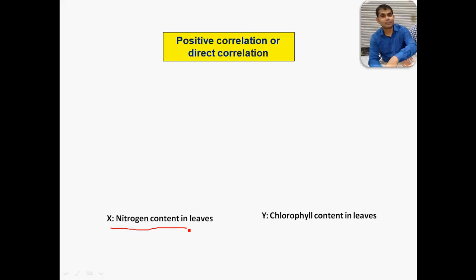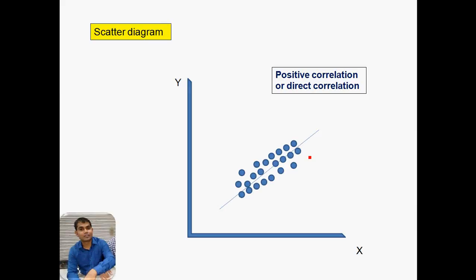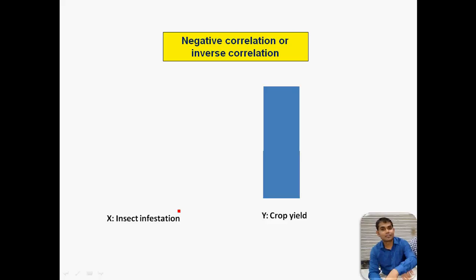Starting with positive or direct correlation: suppose we take the example of nitrogen content in leaf and chlorophyll content in leaf. If the nitrogen content is increasing in the leaf, simultaneously the chlorophyll content will also increase, because nitrogen is a very important component of the chlorophyll and it imparts the greenness in the leaf. In the scatter diagram of positive correlation, you will see a linear increment in X and Y variables — if X is increasing then Y will also continuously increase.